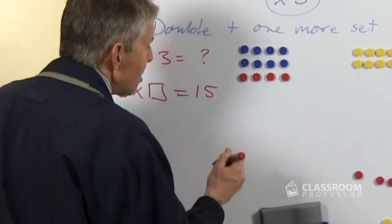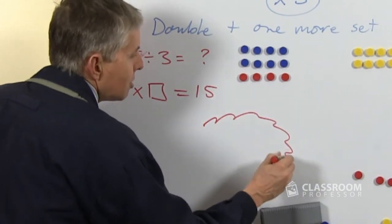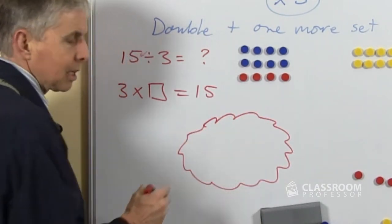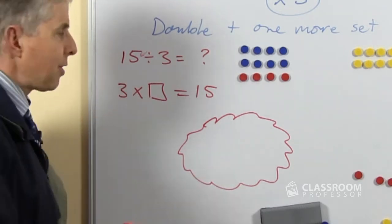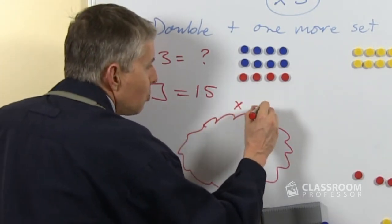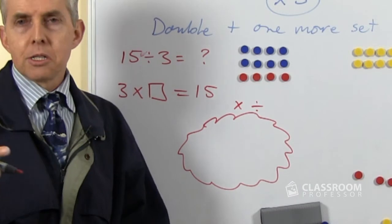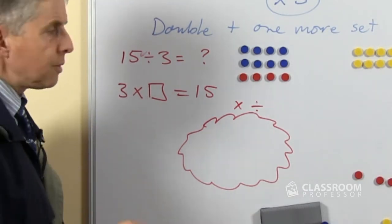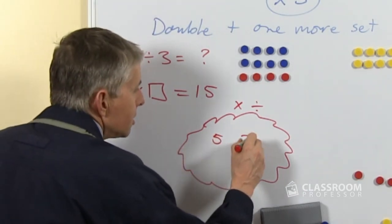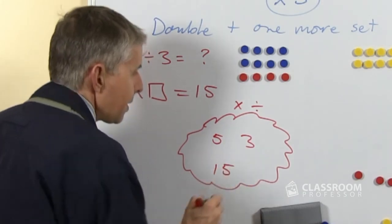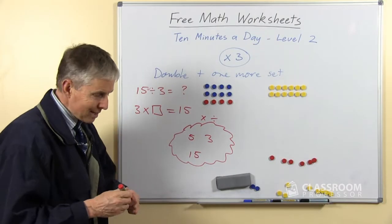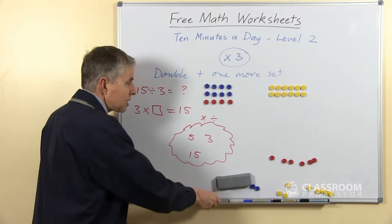This brings up another idea which I introduced in the previous video if you're watching these in sequence, and that's the idea of a number family. So just as with addition and subtraction, with multiplication and division there are sets of 3 numbers like these: 3, 15, and 5, which just go together.